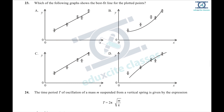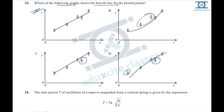Question 23: which graph shows the best fit line for the plotted points? When drawing a best fit line, it must pass through all points considering error bars, with equal distribution of points on either side. Looking at the options, some points are missed in certain choices, but option A gives the best possible fit through all plotted points with equal distribution.